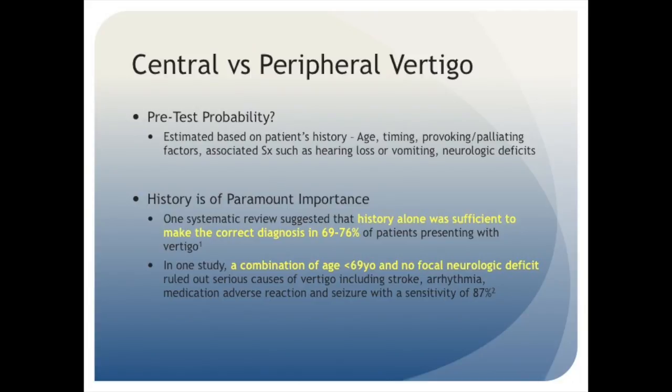We begin by estimating our pre-test probability, which is our initial guess as to the etiology of our patient's vertigo, based on patient demographic information as well as their presenting symptoms, including provoking and palliating factors and associated symptoms such as hearing loss, vomiting, or neurologic deficits. In this case in particular, history is of paramount importance. One systematic review suggested that history alone was sufficient to make the correct diagnosis in up to 76% of patients presenting with vertigo.